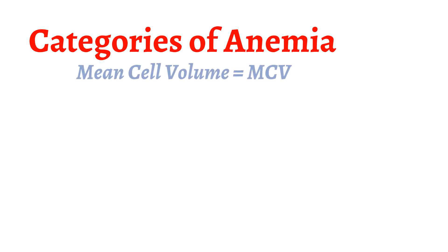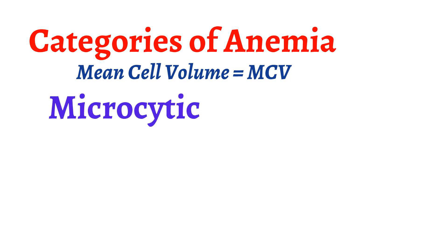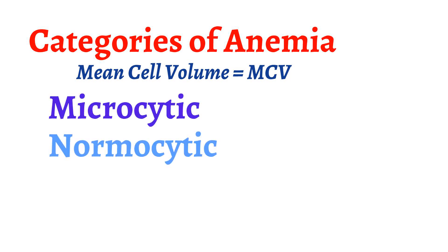We previously talked generally about anemia. Anemia is split into three categories based on the mean cell volume. Mean cell volume, otherwise known as MCV, is a representation of the average size of red blood cells. We divide anemia into causes that lead to a microcytic anemia, normocytic anemia, and a macrocytic anemia.